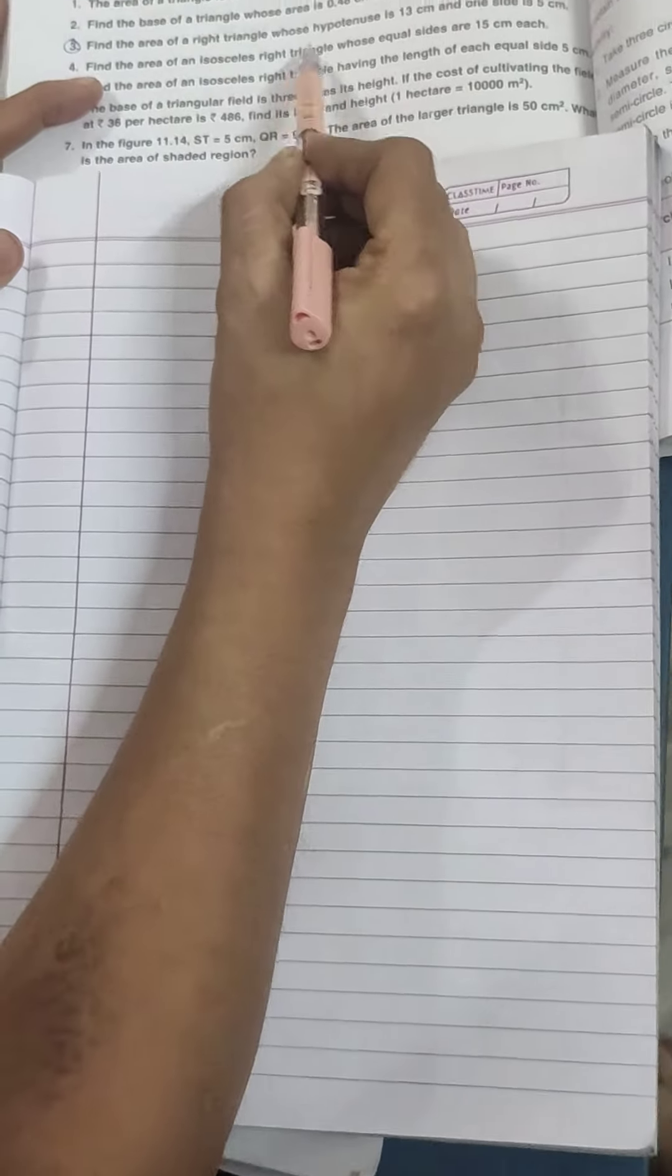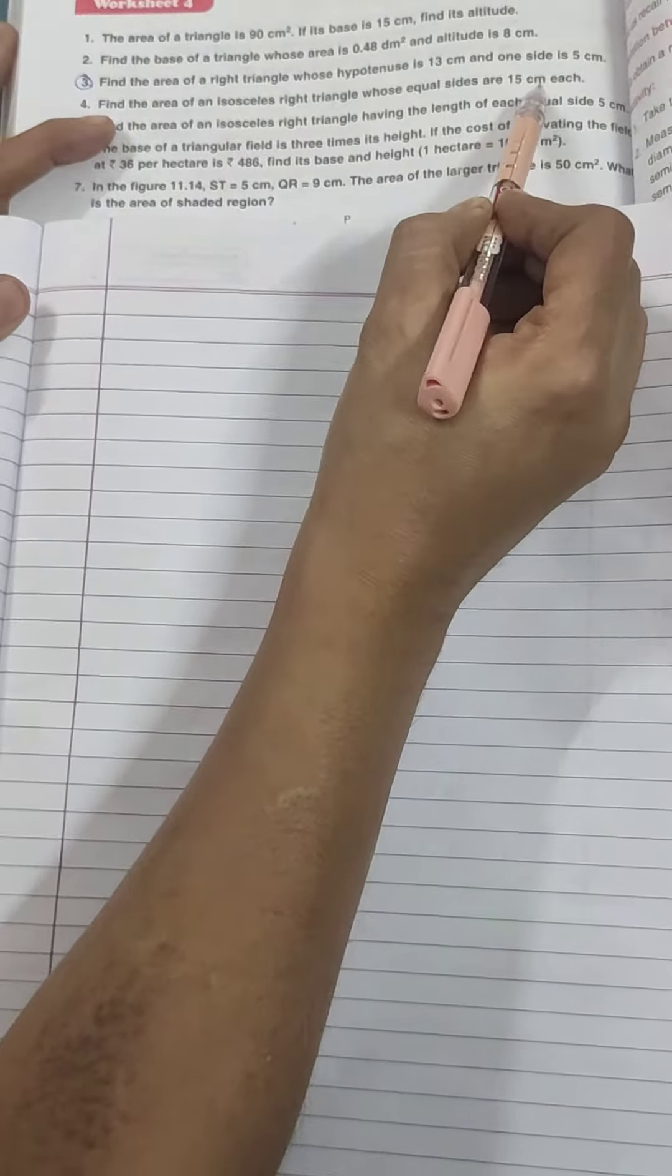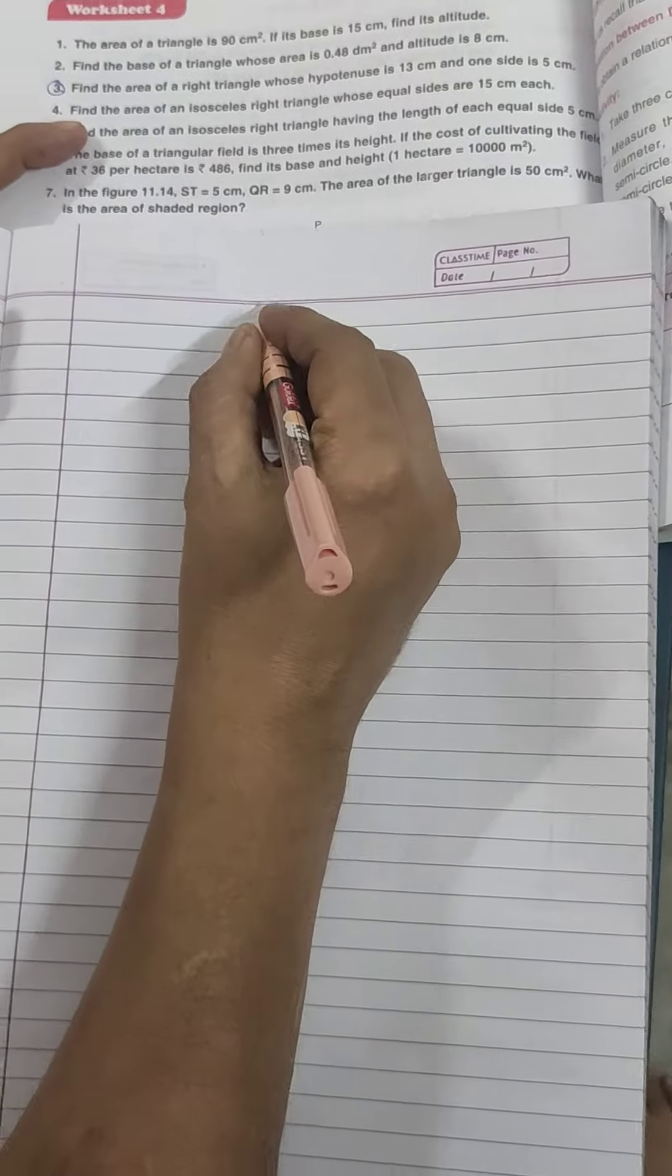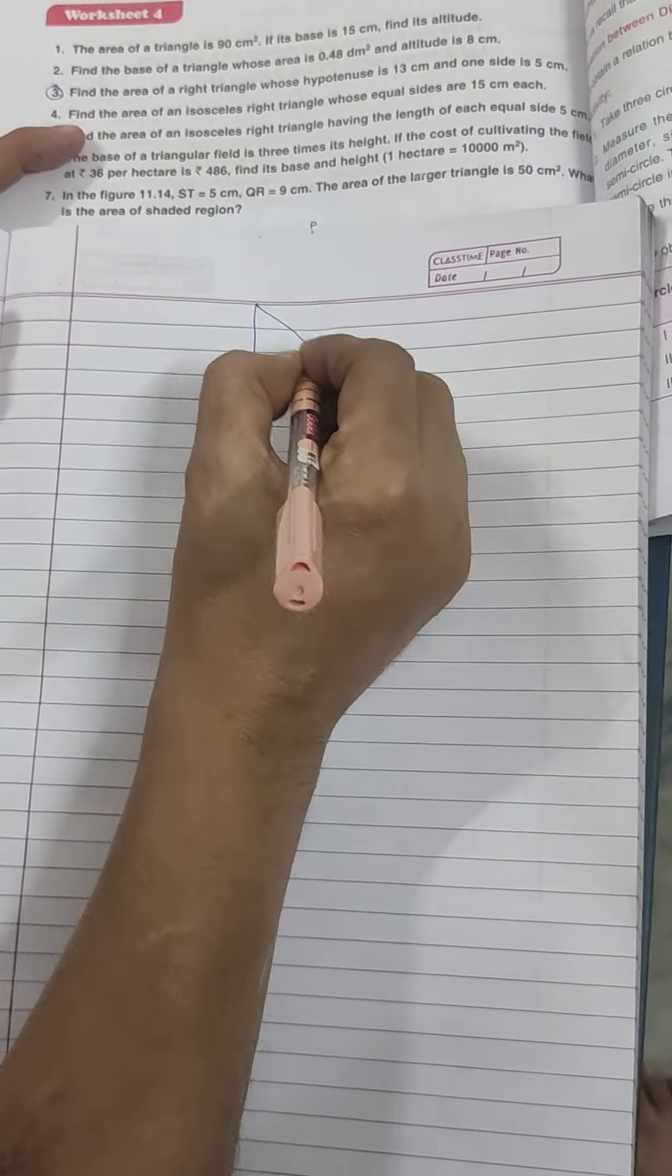Find the area of isosceles triangle whose equal sides are 90 cm. I don't understand, but if you make a figure, you will understand everything.